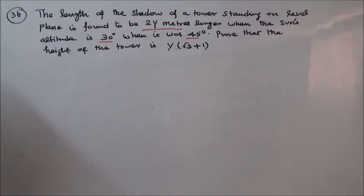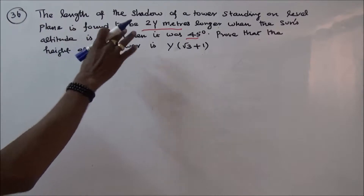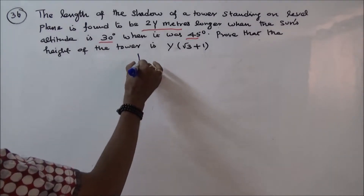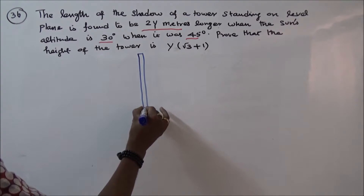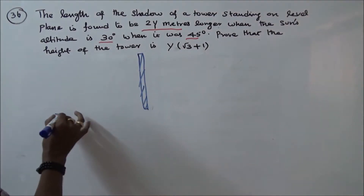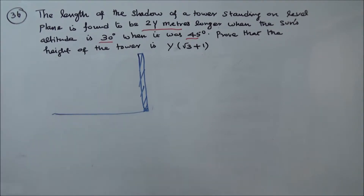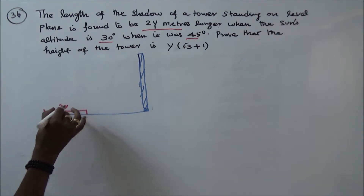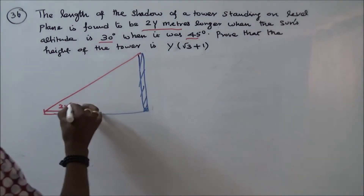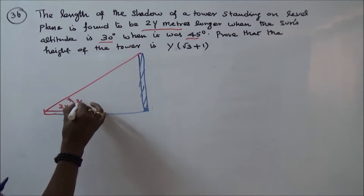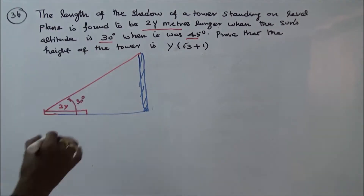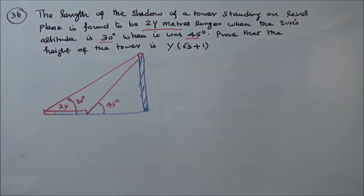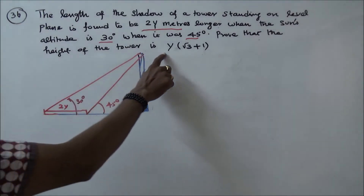The length of the shadow of a tower standing on a level plane is found to be 2y meters when the sun's altitude is 30 degrees. When the sun's altitude is 45 degrees, prove that the height of the tower is y into root 3 plus 1.